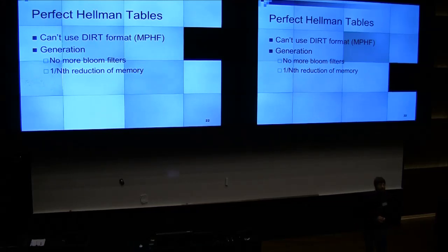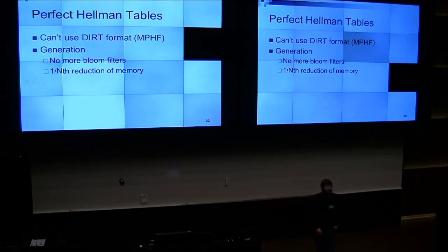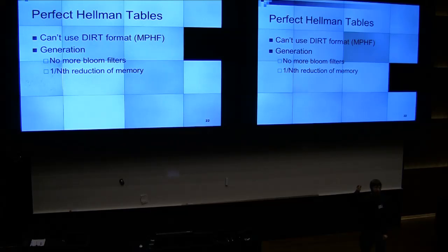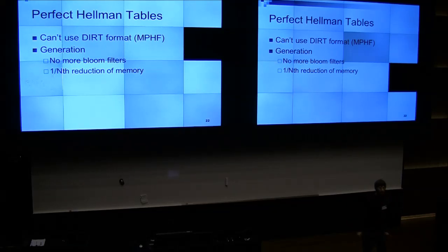The difference between a Hellman table and a rainbow table: they have the same chain length, usually n to the one-third. The number of chains in a Hellman table is roughly n to the one-third. For a rainbow table it's n to the two-thirds — much longer. For a Hellman table you'd have n to the one-third tables — n to the one-third tables versus one rainbow table. That's what the difference is.